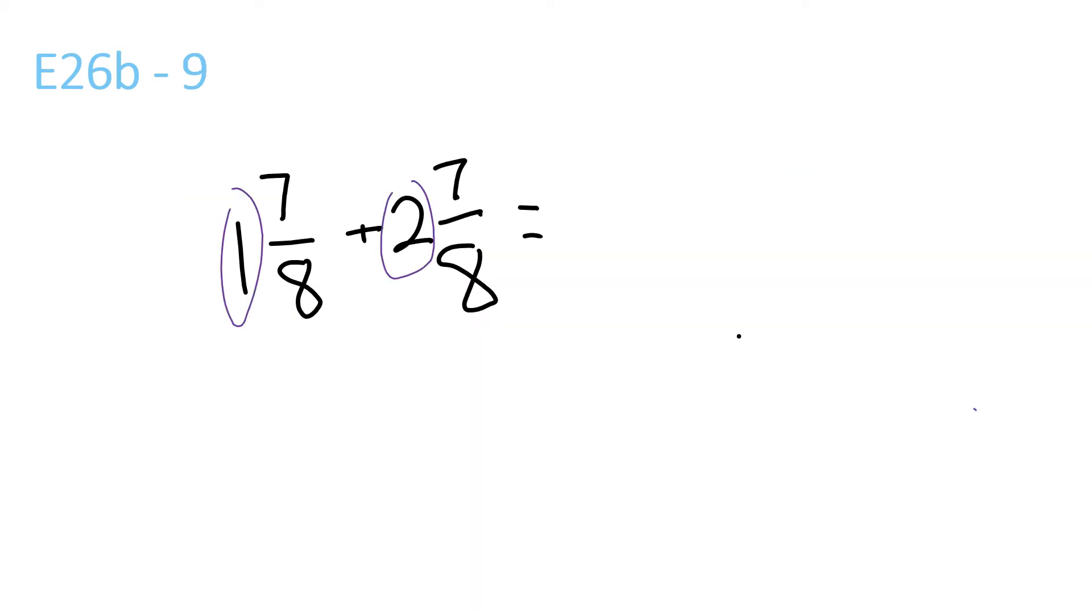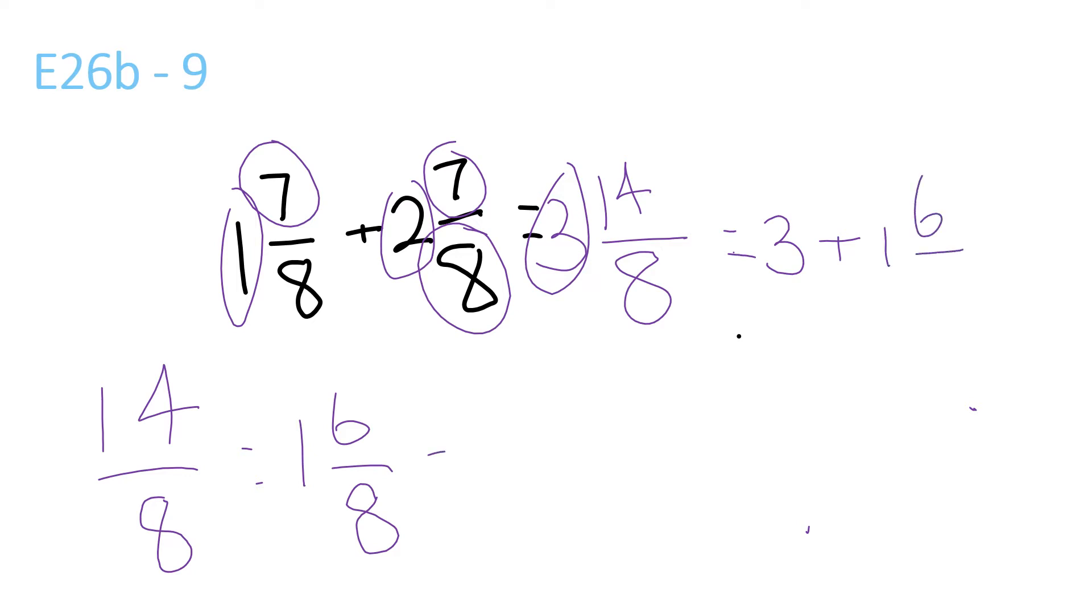1 plus 2 is 3. 7 plus 7 is 14, over 8, because it stays the same. This is equal to the whole number here, 3 plus 14 over 8, and this is just a side note. 14 over 8 is equal to 1 and 6 over 8, because 8 goes into 14 once, remainder 6 over 8. And then, 1 and 6 over 8 equals, 1 plus 3 is 4, and 6 over 8, because this just gets brought over. And then it would be, 6 and 8 can be reduced to 3 over 4, so it would be 4 and 3 over 4.